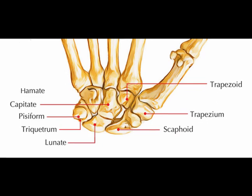The proximal row of the carpal bones consists of the scaphoid, the lunate, the triquitrium, and the pisiform.